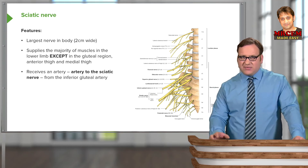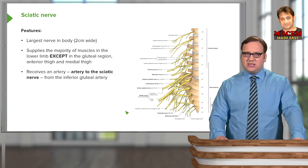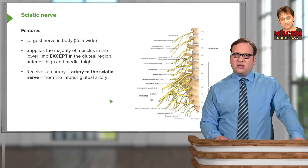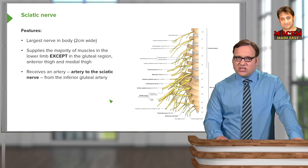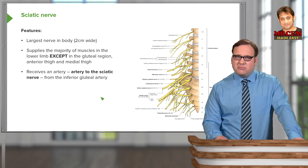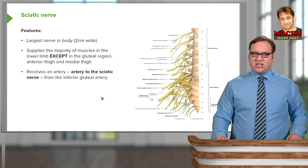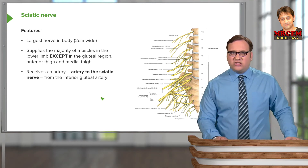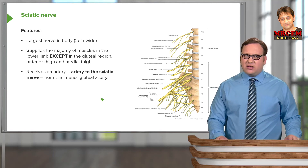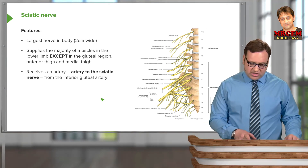The sciatic nerve is the largest nerve in the body, about two centimetres wide. It supplies the majority of the muscles in the lower limb except the gluteal region, the anterior thigh, and the medial thigh. It is so big that it has its own artery — the artery to the sciatic nerve — which comes from the inferior gluteal artery, as we will see when we look at the gluteal region.